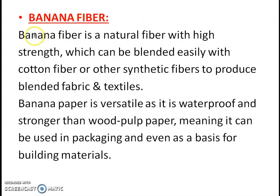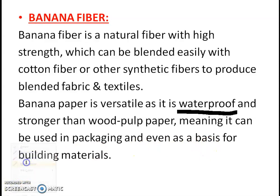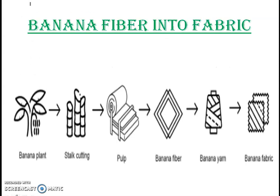Now we will talk about banana fiber. Banana fiber is a natural fiber with high strength which can be easily blended with cotton or other synthetic fibers to produce blended fabric and textiles. Banana paper is versatile — it is waterproof and stronger than wood pulp paper, meaning it can be used in packaging and even as a basis for building materials. Now we will look at the whole process that converts a raw banana plant into usable banana fabric.